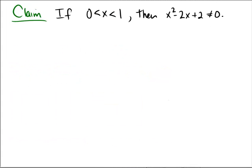Let's try to prove the claim: if 0 < x < 1, then x² - 2x + 2 ≠ 0.